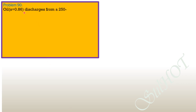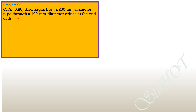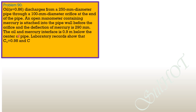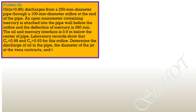Problem 90: Oil of specific gravity 0.86 discharges from a 250 mm diameter pipe through a 100 mm diameter orifice at the end of the pipe. An open manometer containing mercury is attached to the pipe wall before the orifice, and the deflection of mercury is 290 mm. The oil-mercury interface is 0.9 meter below the center of the pipe. Laboratory records show that the coefficient of velocity is 0.98 and coefficient of contraction is 0.63 for this orifice.